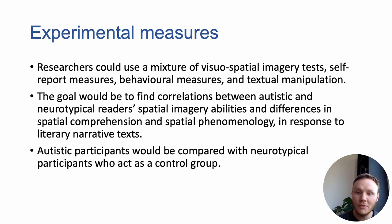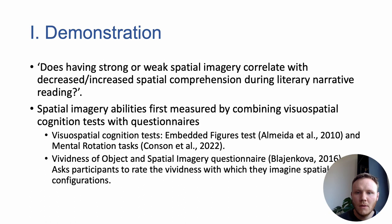Autistic participants would be compared in this scenario with a control group, a neurotypical population. If we wanted to investigate whether poor spatial imagery correlates with decreased spatial comprehension during literary narrative reading, we could do it this way.